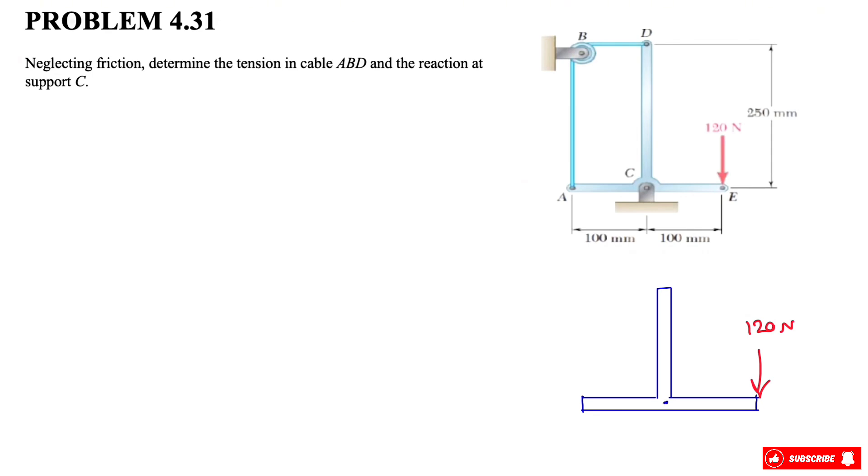On the free body diagram, point C is a pin which means we have both x and y components, so Cx and Cy. We have one single cable ABD which has the same tension throughout.